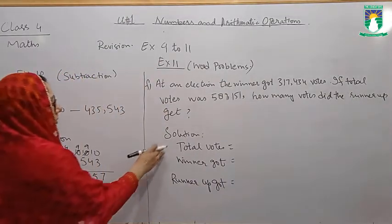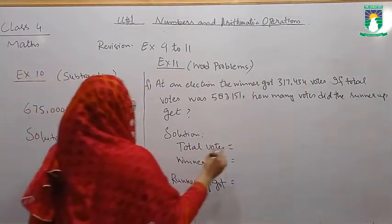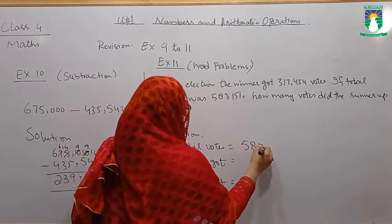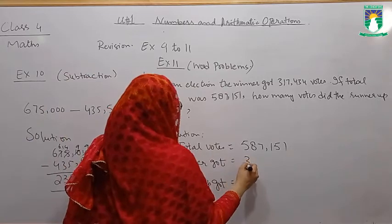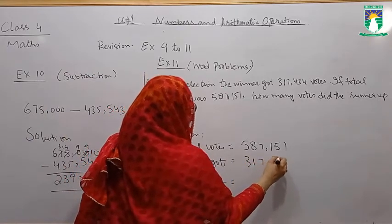Aap sabse pehle jo information aapko given hai, aap uska data banaenge. Kya pata hai? Total votes. Total value. Winner got. Winner ne kitne liye? 317,434.